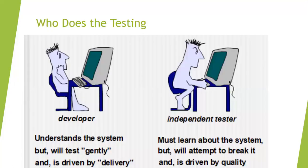Next, we need to decide who does the testing — whether it is a developer or an independent tester. For a small project, the developer itself acts as a tester. However, as a developer, they will tend to test the software to prove it works, then deliver it on schedule and within budget. In the case of an independent tester, they will learn about the system, attempt to break the software product, and are driven by quality.